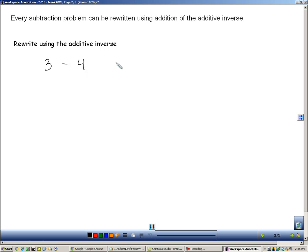3 minus 4. Let's rewrite it using the additive inverse. So instead of minus 4, we're going to add the opposite, which is adding a negative 4. These two expressions mean the same. This one is subtraction, this one is addition.